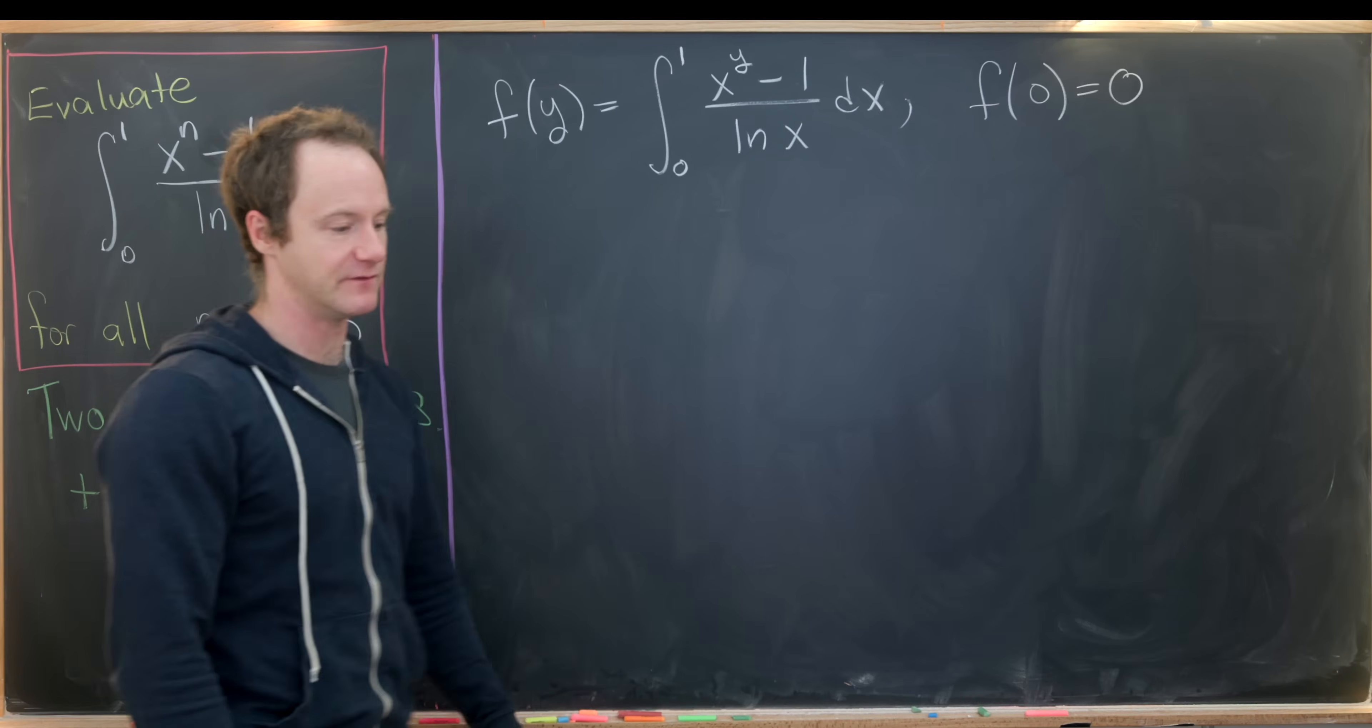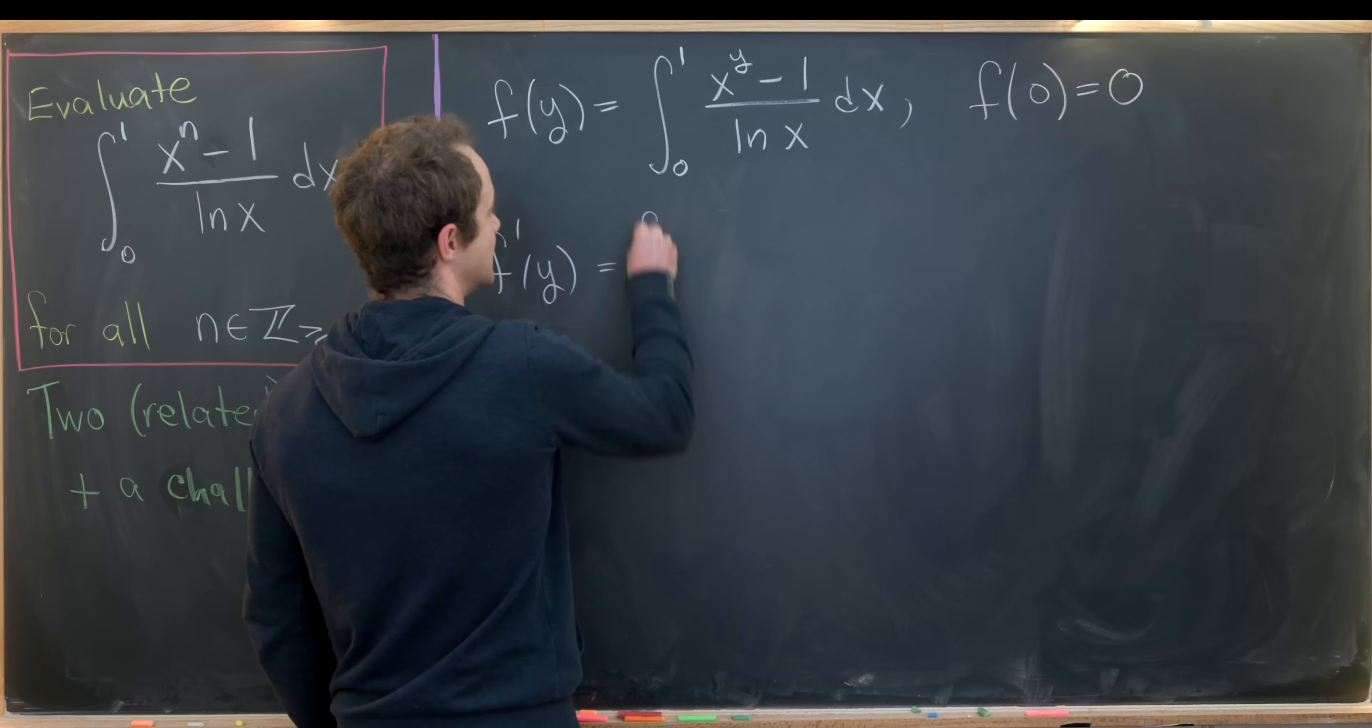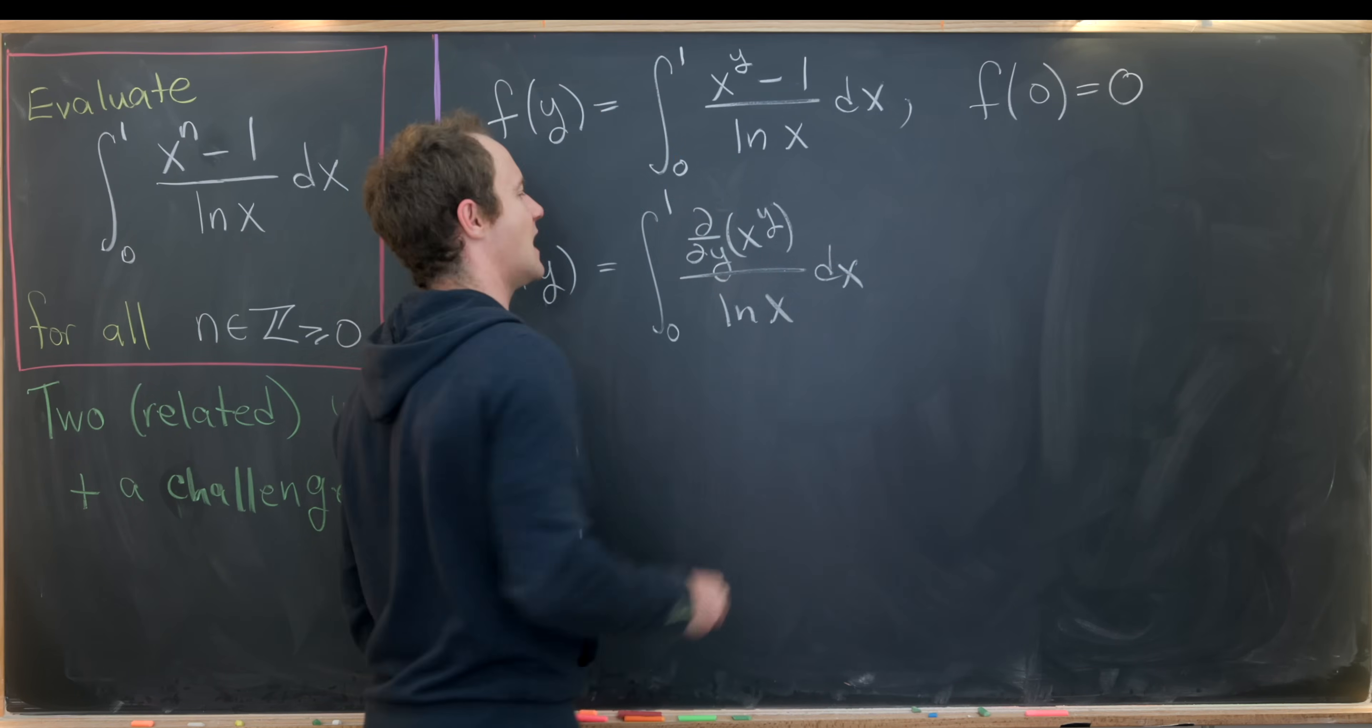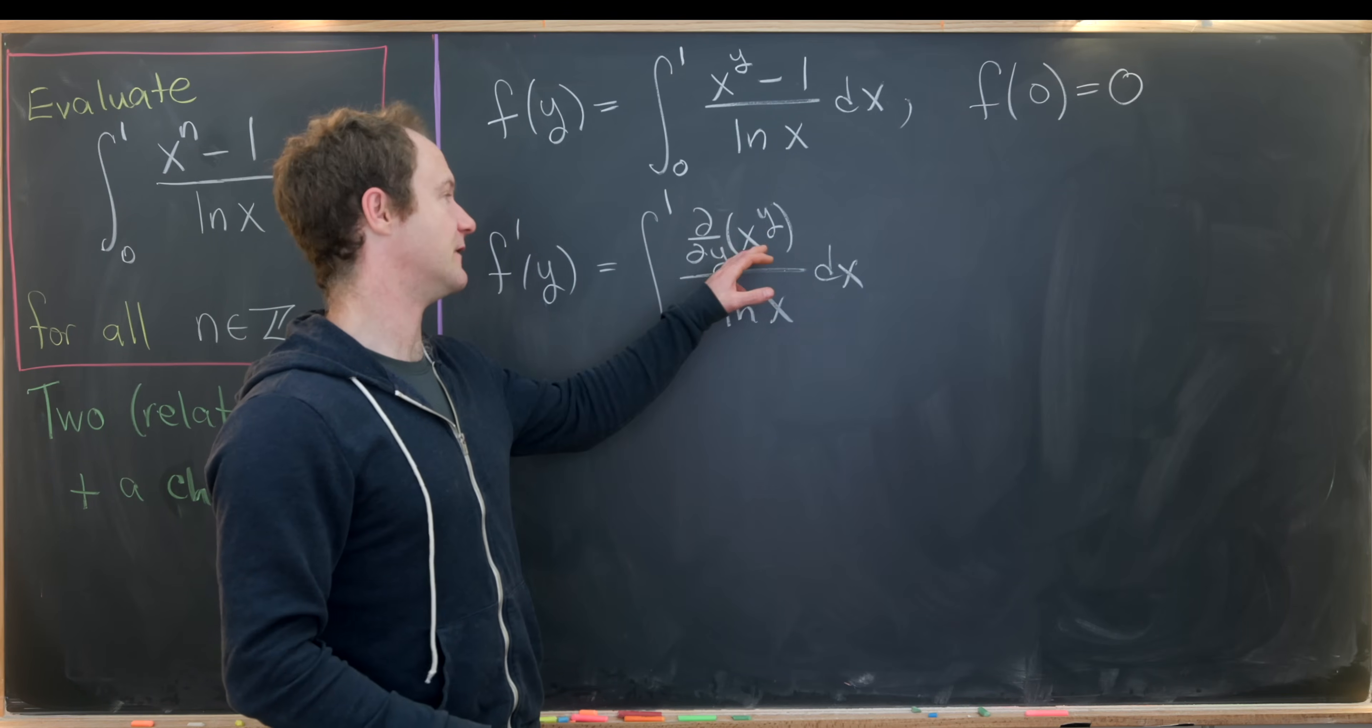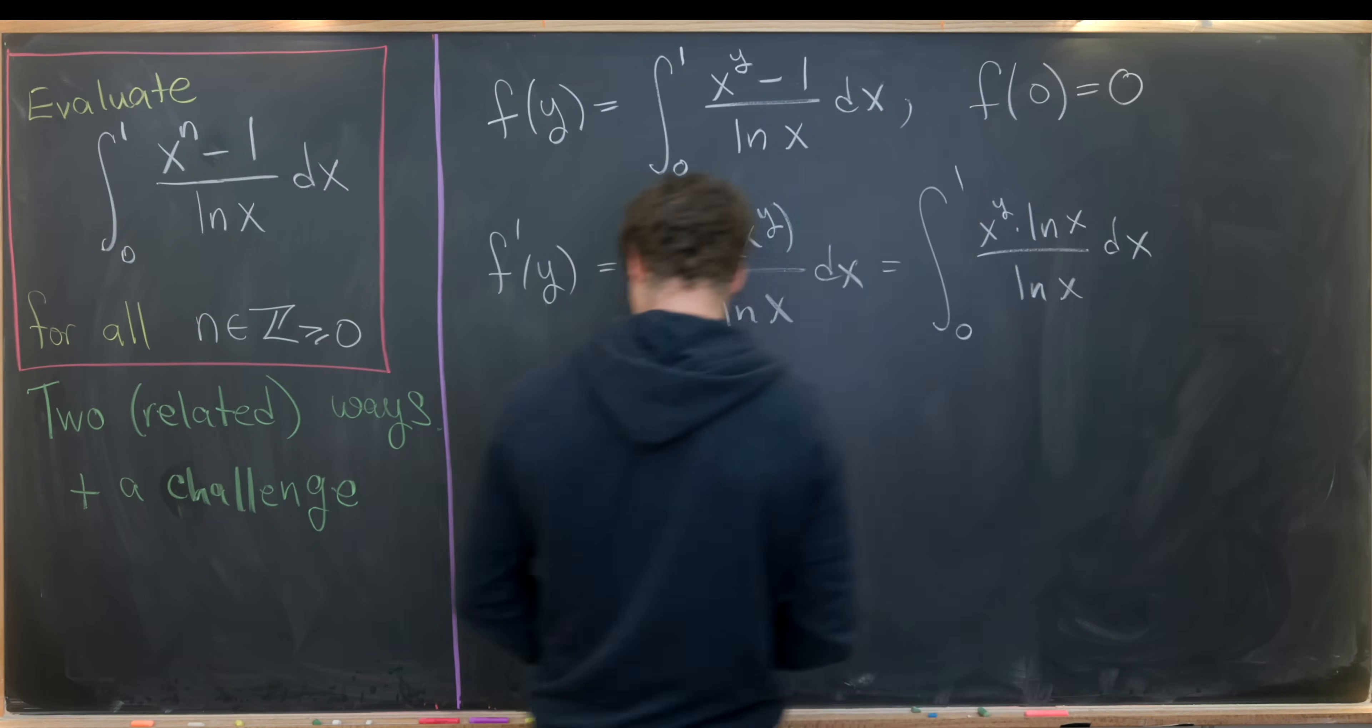And we'll start by noticing that f of 0 is very clearly equal to 0. That's because the integrand collapses just to 0, so we're integrating the 0 function. So now let's take the derivative of this, building a differential equation for our goal function. So let's take the derivative with respect to y. I'll call that f prime of y. So that is going to be the integral from 0 to 1 of the derivative with respect to y of x to the y over the natural log of x. Keeping in mind that the derivative with respect to y of the number 1 is 0 because that's a constant. Now we're going to use standard derivative rules. Here this partial derivative views x as a constant. So we can rewrite this as, let's see what it'll be. It'll be x to the y times the natural log of x over the natural log of x.